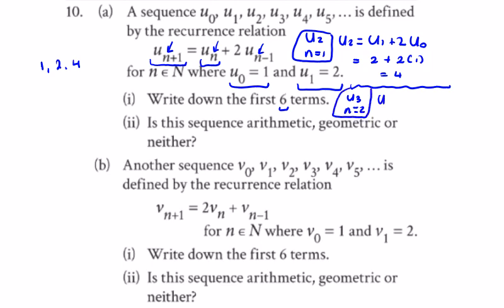So u3 will be equal to u2 plus twice u1. So u2 is 4, plus twice 2, which is equal to 8. So you can see it is doubling each time: 1, 2, 4, 8. And then we're going to get, obviously, 16 and 32 for the first 6 terms. And this one, like one of the previous questions, is geometric.